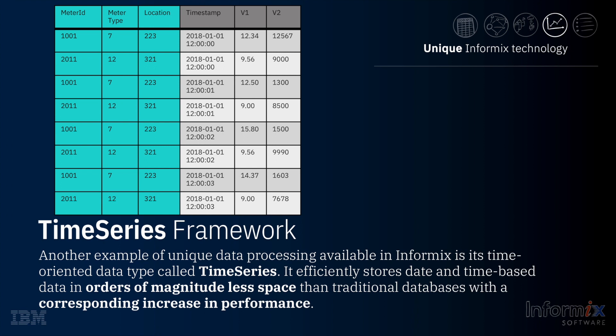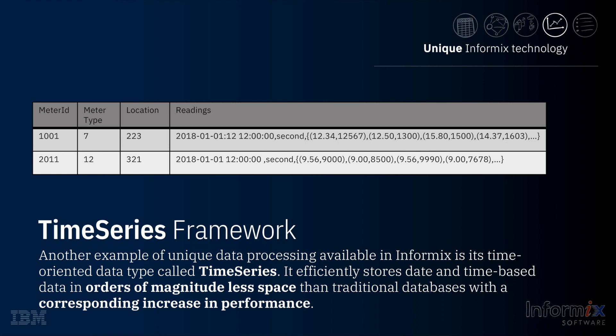In a traditional database, a separate row in a table is required for each sensor ping or data value. This often results in tables with billions of rows containing redundant and unchanging data, which is unmanageable from a storage and administrative perspective. In Informix Time Series, all readings for a particular sensor or device are stored in one row. The redundant data is factored out and stored in a set of index columns within the row, and the data values themselves are stored in a time-based array in another column. As a result, the table row count shrinks to just the number of data-generating devices and there is no redundant data. There is another video with more information about Time Series if you're interested in learning more.